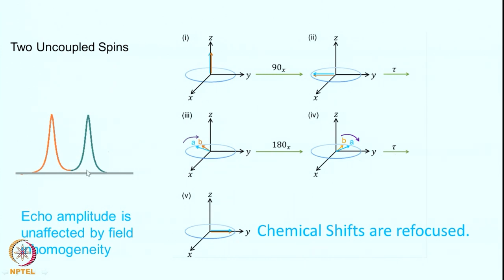These two spins considered could be separate independent spins, or they could be the same spin located in different portions of the sample due to magnetic field inhomogeneity. If the magnetic field is inhomogeneous, one portion of the sample sees one field, another portion sees another field, resulting in different precessional frequencies. As a result of the echo, they come back to the same position — we say the echo amplitude is unaffected by field inhomogeneity. This important concept will be used later for measuring transverse relaxation times.